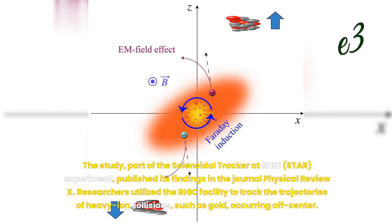The study, part of the solenoidal tracker at RHIC (STAR) experiment, published its findings in the journal Physical Review X. Researchers utilized the RHIC facility to track the trajectories of heavy ion collisions, such as gold, occurring off-center.